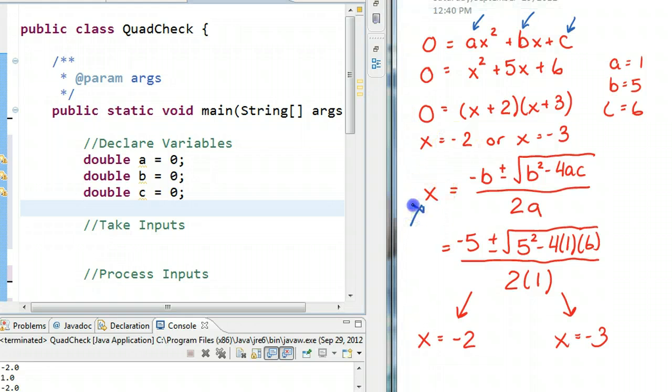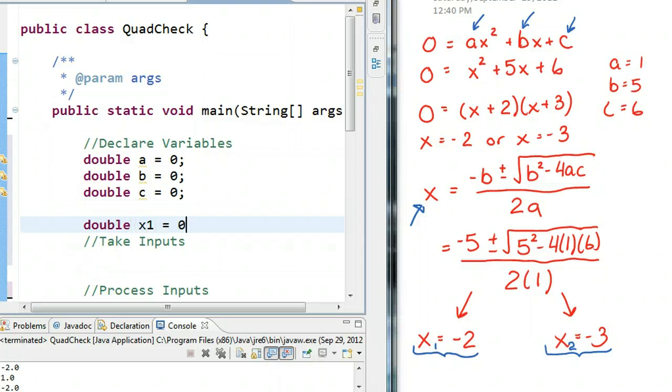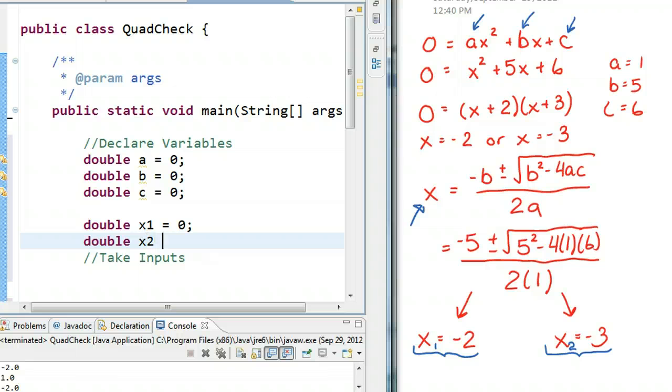But, what stands out is that I have two X values. I have X1 and X2. So, I'm going to need two separate variables to hold each of those outputs. So, we'll call this double x1 equals 0, double x2 equals 0.